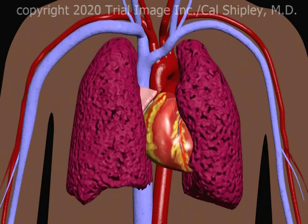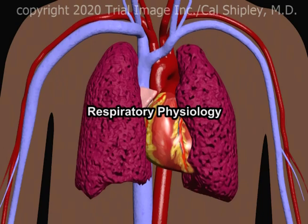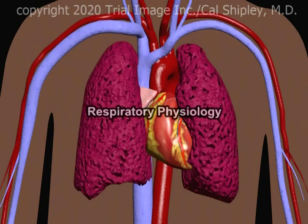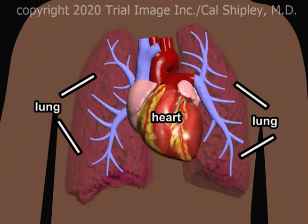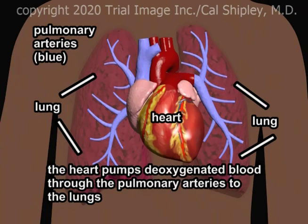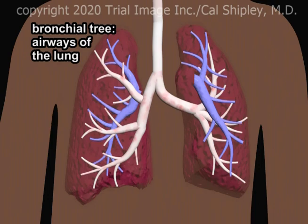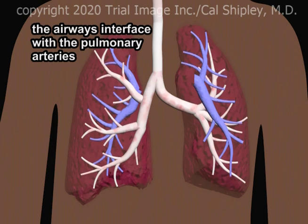COVID-19's primary target in the human body is the lung, and so it is critically important that we understand a little bit about how the lungs work in order to understand how the virus causes its damage. Shown here are the heart, the left and right lung, and in blue, the pulmonary arteries, through which the heart pumps oxygen-poor blood which has returned from the venous system. The pulmonary arterial system consists of an intricate web of blood vessels. The bronchial tree is an equally intricate system of airways distributed throughout both lungs. There is a physical interface between the airway system and the pulmonary arterial system.